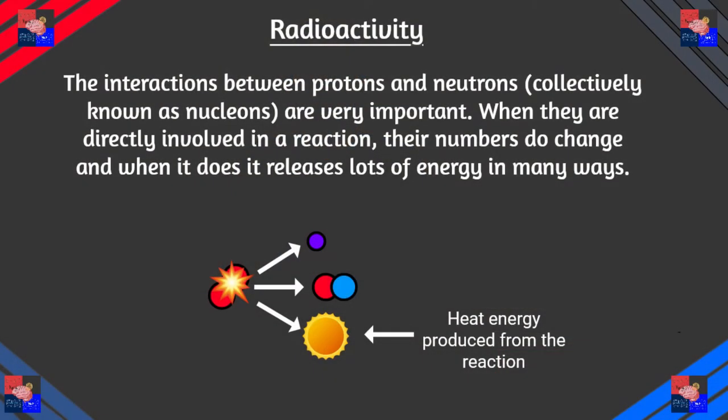Now radioactivity doesn't have a lot to do with the type of chemistry we've been going through so far. What we've been learning in this series is basically the outer electron shell making all the bondings and doing all the reacting, and the nucleus basically just stays unaffected. But the interactions between the nucleons are important, and when their numbers are changed, then a lot of that atom can change. This is called nuclear chemistry.